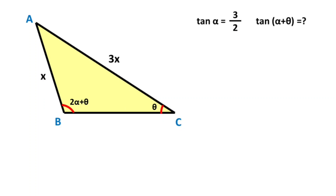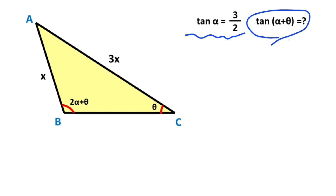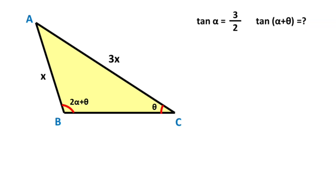Hello everyone. In this video we have one triangle where the ratio of two sides is given as 3. This angle is given as theta, here is given as two alpha plus theta, and the question is: if the tangent of alpha equals three over two, then what is the value of the tangent of alpha plus theta?